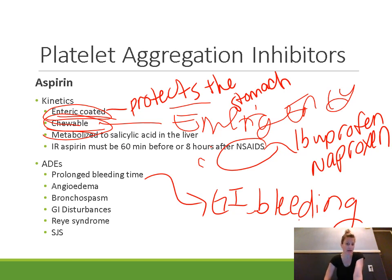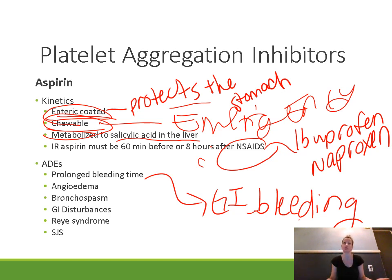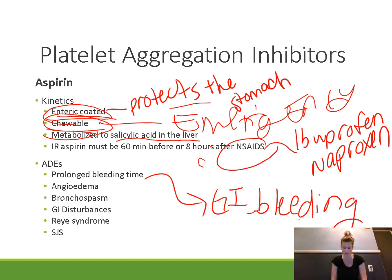Aspirin is metabolized to salicylic acid in the liver, and salicylic acid is also effective as a COX inhibitor. The half-life of aspirin itself is very short — about 15 to 20 minutes — but the salicylic acid has a half-life of between 3 and 12 hours, so you get a longer duration of action than the aspirin half-life alone would suggest.